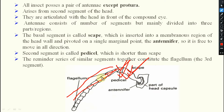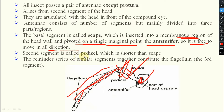The scape is inserted into a membranous region of the head called the antennal fossa, and pivoted on a single marginal point known as the antennal foramen. You can think of it like a joystick, so that it can be rotated easily — it is free to move in all directions. The second segment is your pedicel, the shortest one. The remaining series of similar segments together constitute your flagellum, the third part, and here the head capsule will be there.